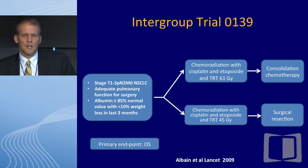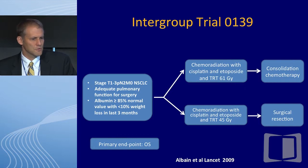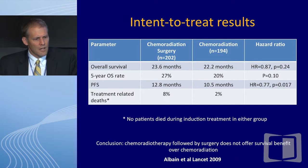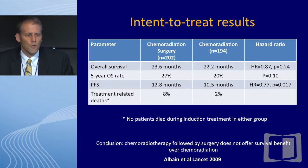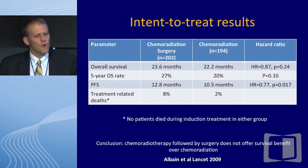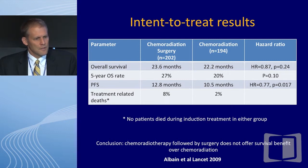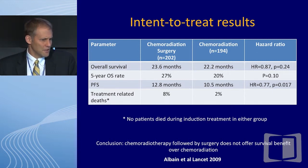This is the Intergroup trial, which Jack showed you the schema for. It took patients who were surgically resectable and assigned them to either chemo-radiation therapy or chemo-radiation therapy followed by surgical resection. The overall survival, which was the primary endpoint, was negative — this is a negative trial. The PFS was slightly better in the chemo-radiation followed by surgery arm.